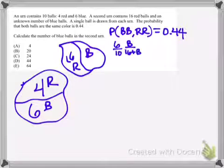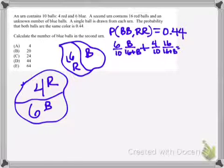That will be B over 16 plus B. Because if there are B blue balls, then there will be 16 plus B balls overall in that urn. Using something similar, the probability of getting two red balls is going to be 4 out of 10 from the first urn, multiplied by the probability of getting a red ball in the second one, and that will be a probability of 16 over 16 plus B.